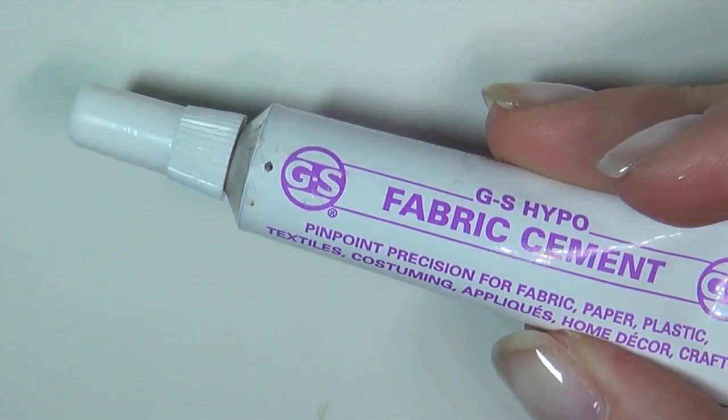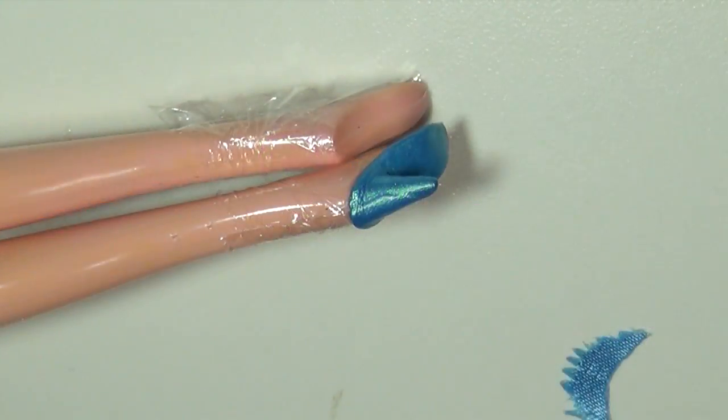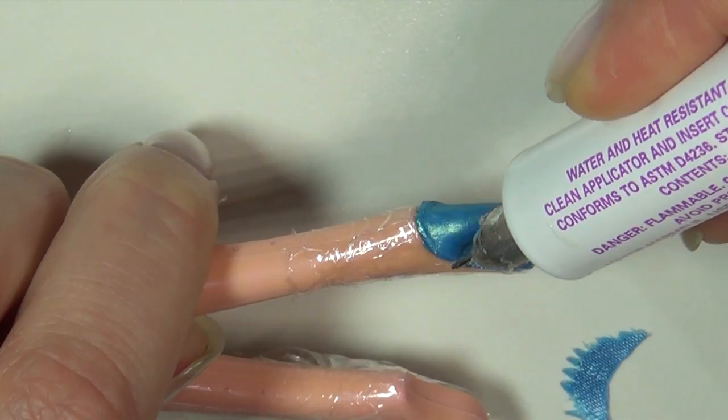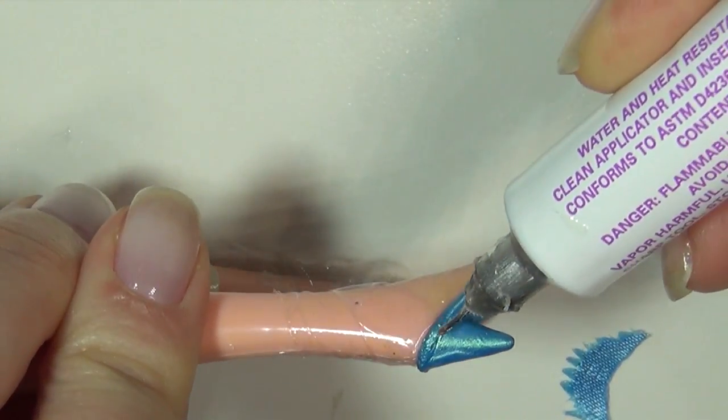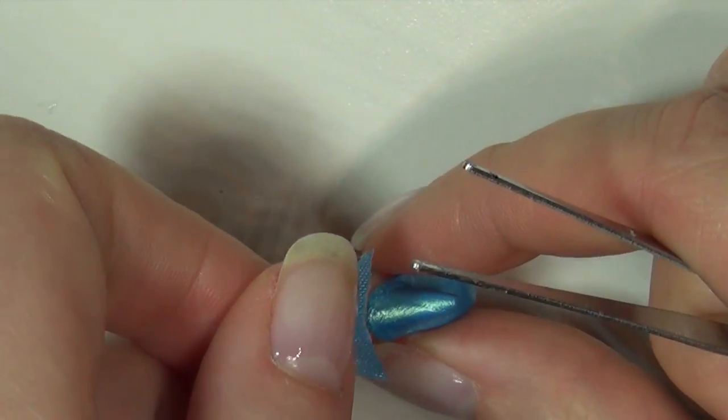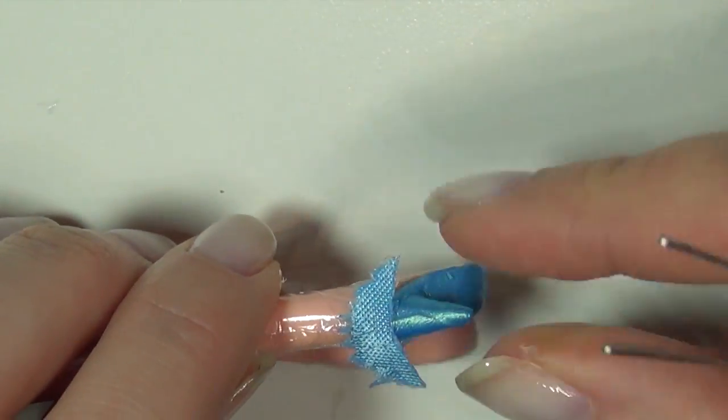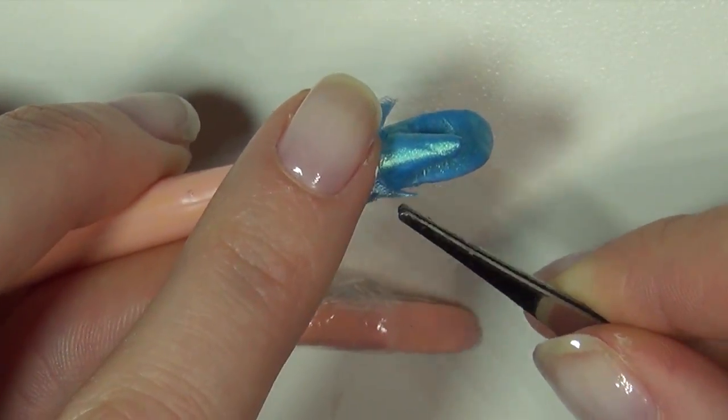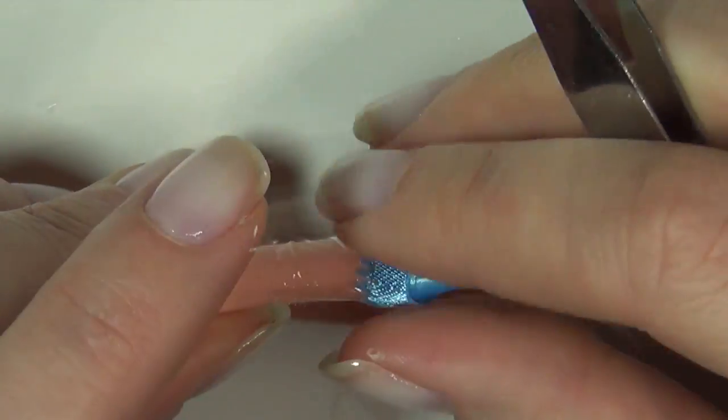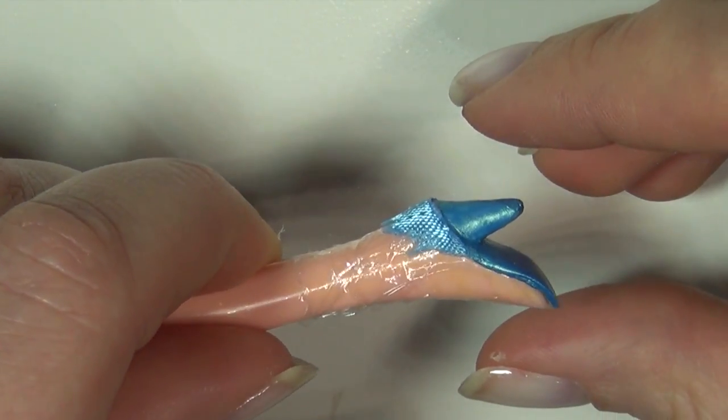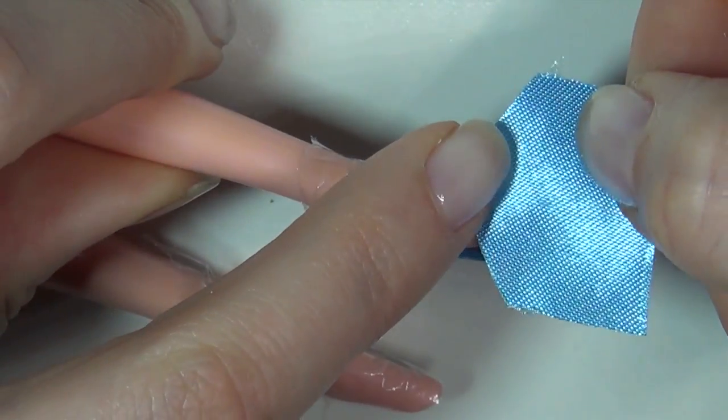Then glue it to the shoe. I'm using a fine point fabric glue. Make a piece for the front part the same way.